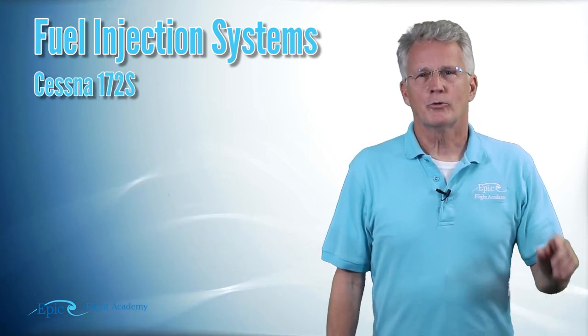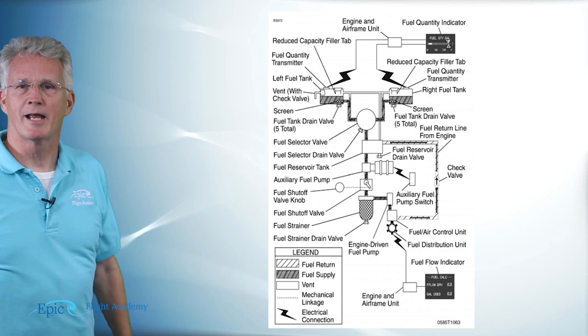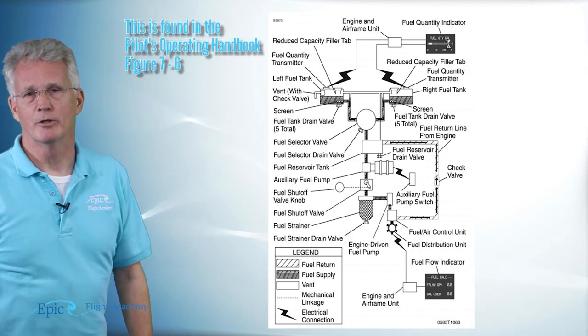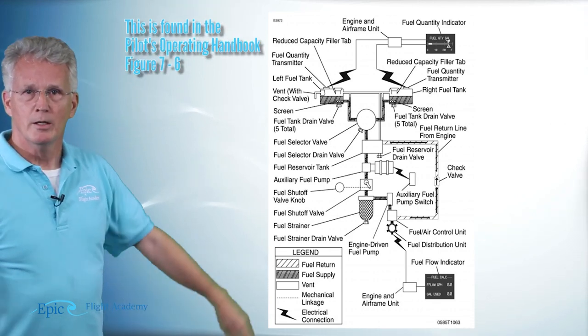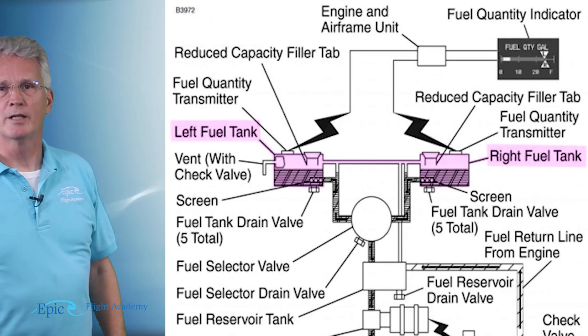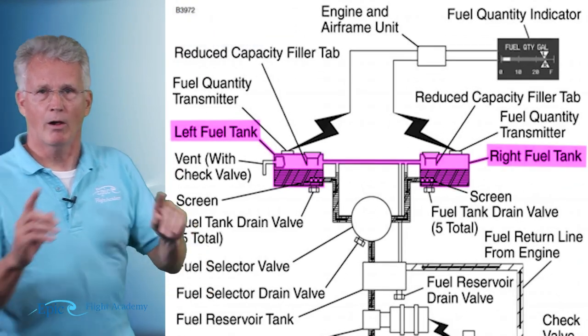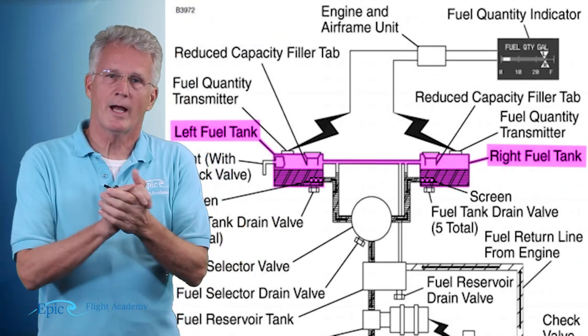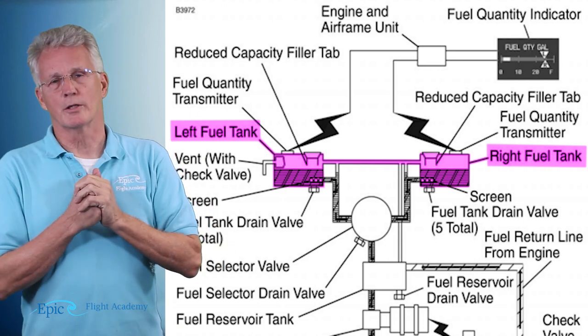We're going to trace the fuel from the wing tanks all the way to the cylinder. This is the schematic that you're going to find in your POH. We start up here at the top in the wing tanks, and right out of the gate I want you to notice two things.